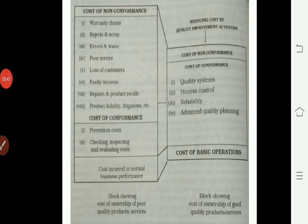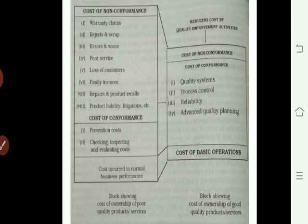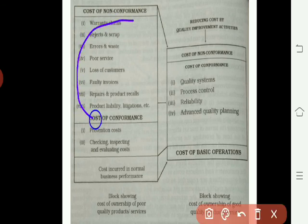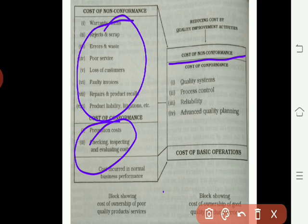This is one more chart which describes many things — like warranty claims, rejects and scraps, errors, waste, poor services, loss of customers, faulty invoices, and rework. All these are non-conformance costs. If you perform activities that reduce the conformance cost, then your non-conformance side will not lose anything, because a good conformance process ensures the product reaches the customer in very good condition. After that, there is less failure and fewer things to worry about.